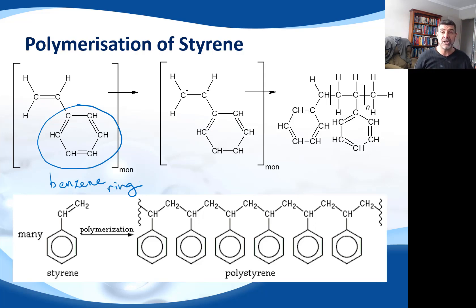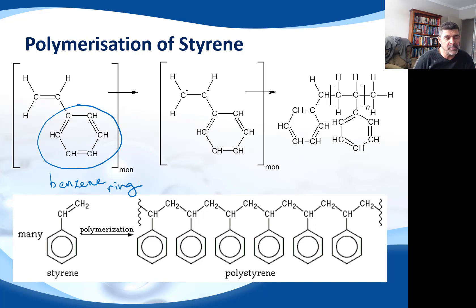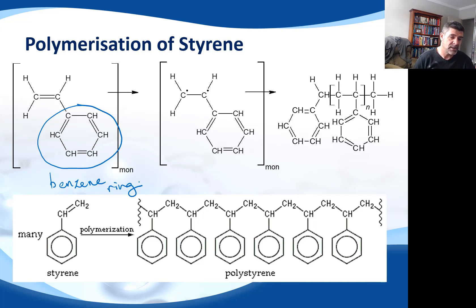Having such a large substituent has completely changed the whole nature of this particular monomer, and as a result it's also going to change quite significantly some of the properties of the resulting polymer. You can see in this simplified polymerization diagram that we've changed the way we represent the benzene ring — you can see this little circle.